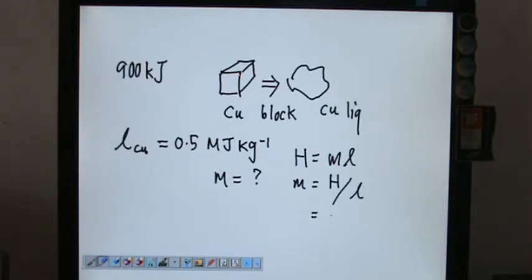So H over L is 900 kilojoules over 0.5 megajoules per kilogram. So this one, after pressing your calculator carefully, you should be able to get 1.8 kilograms.